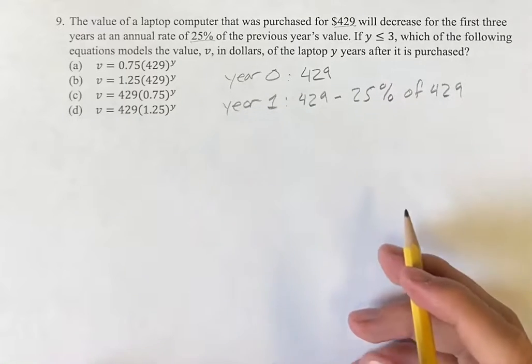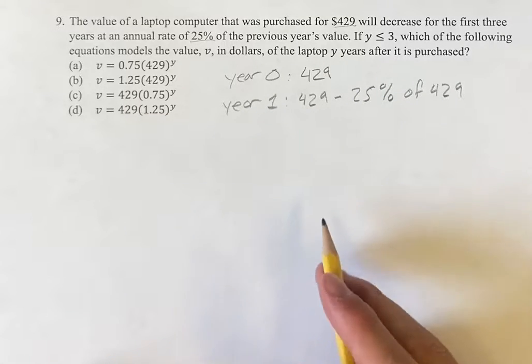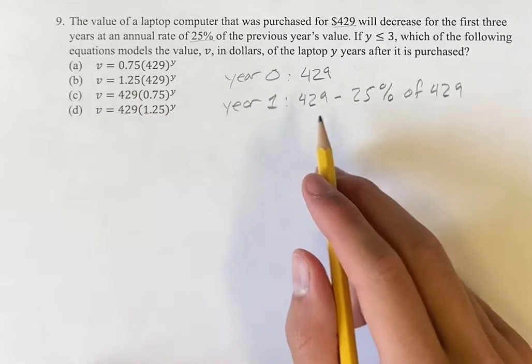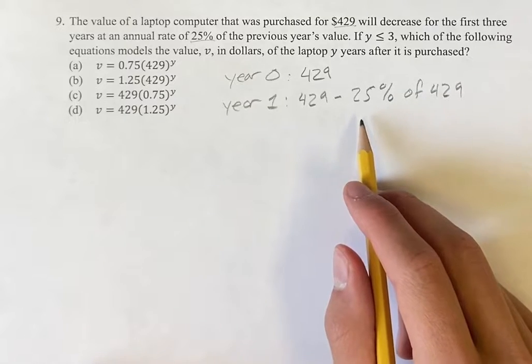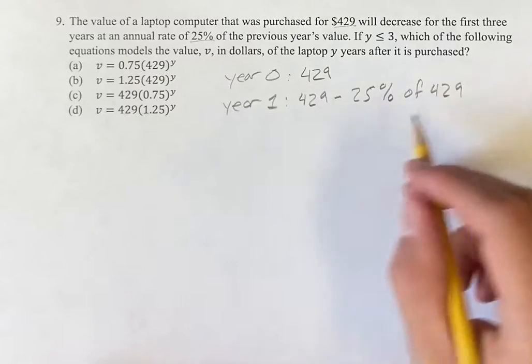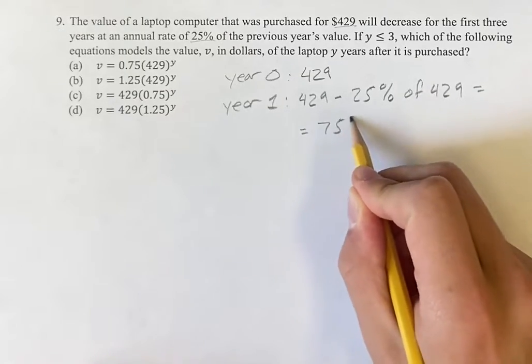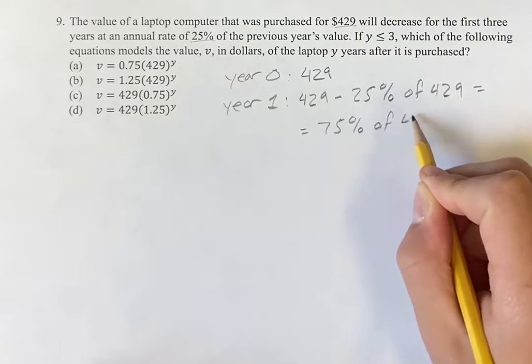$429 is 100% of itself. So we can think of this as 100% of $429 minus 25% of $429. So at the end of year one, this is going to equal 75% of $429.